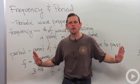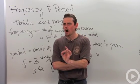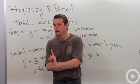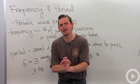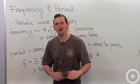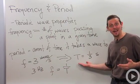So what's the period? Well, if three waves come every second, then how long does each wave take? Well, three waves per second means each one's got to take a third of a second.